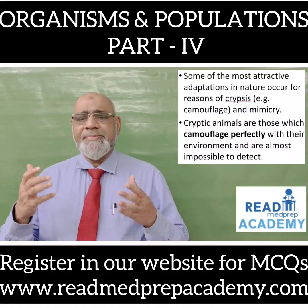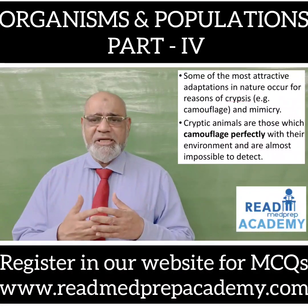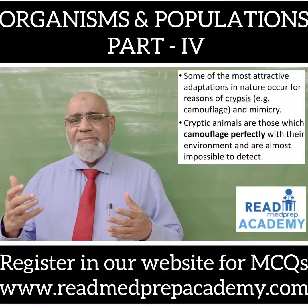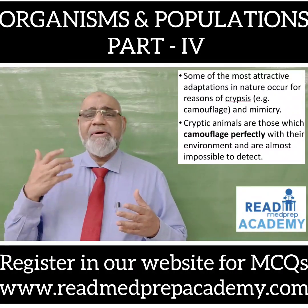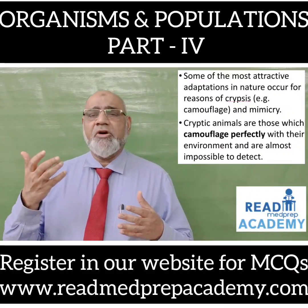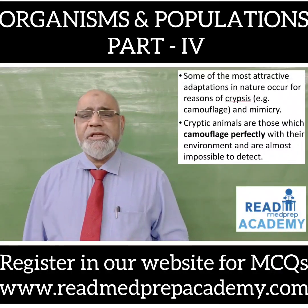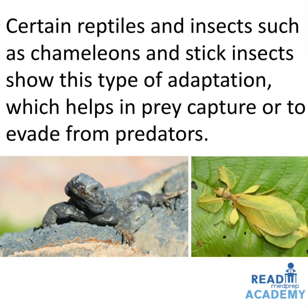Some of the most attractive adaptations in nature are for reasons of crypsis — for example, camouflage and mimicry. Cryptic animals are those which camouflage perfectly with their environment and are almost impossible to detect. Certain reptiles and insects such as chameleons and stick insects show this type of adaptation, which helps in prey capture or to evade predators.